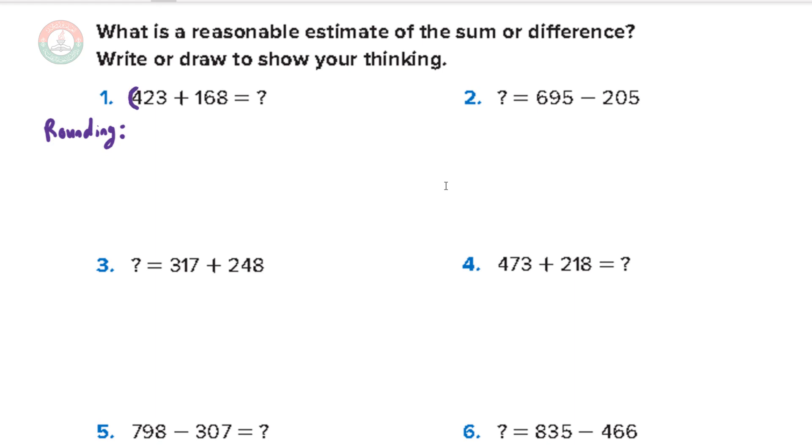I'll circle the hundreds. I'll circle the four and underline the two. And as you remember from lesson 2.2, if the underline digit is zero, one, two, three, four, we say it's a weak digit. We don't add one to the circle digit. But if it's five, six, seven, eight, nine, we add one to the circle digit.